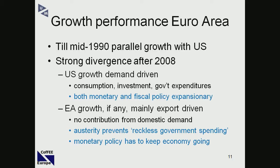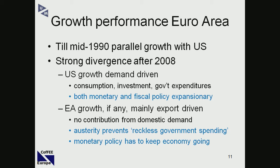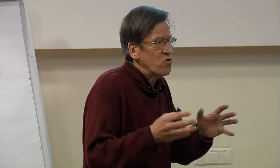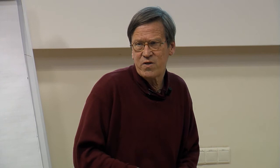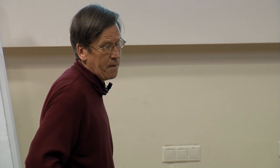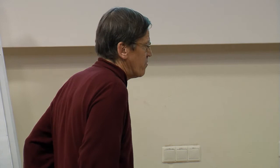The growth performance in the US was parallel with Europe until the mid-90s. Then it diverged strongly because in the US, growth was demand-driven — consumption, investment, and government spending — because both monetary and fiscal policy were expansionary. Both the Federal Reserve Bank and the government helped to stimulate the economy. Whereas in Europe, if we had growth, it was only export-driven, not because demand was stimulated from domestic factors. This has to do with austerity — the European mantra that the government should not spend recklessly.